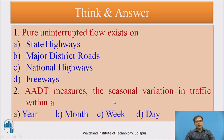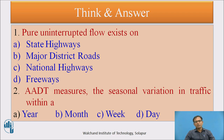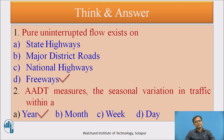Pause and answer: where does pure uninterrupted flow exist — state highways, MDR, national highways, or freeways? And what does ADT measure — seasonal variation within a year, month, week, or day? The correct answers are: pure uninterrupted flow exists on freeways, and ADT measures seasonal variation within a year.